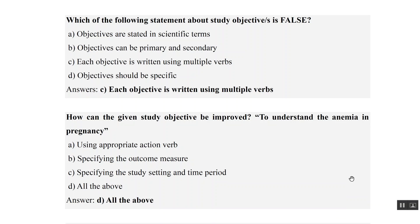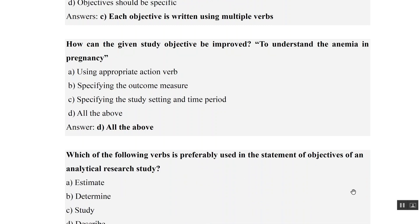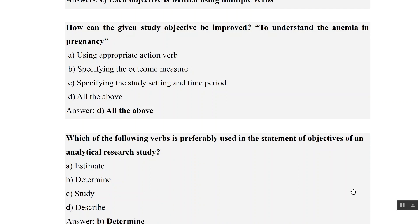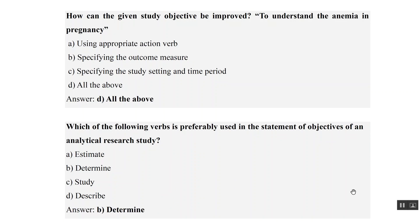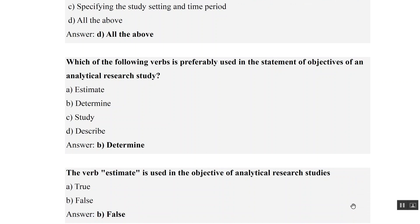How can the given study objective 'to understand the anemia in pregnancy' be improved? We have not used an appropriate verb — that is a mistake. We have not specified the outcome measurement. We have not specified the study setting or time period. So all of the above can be improved. Regarding verb usage: for an analytical research study we use the verb 'determine', and for descriptive we use 'estimate'. The verb 'estimate' is used in analytical research study is false — estimate is used for descriptive research.